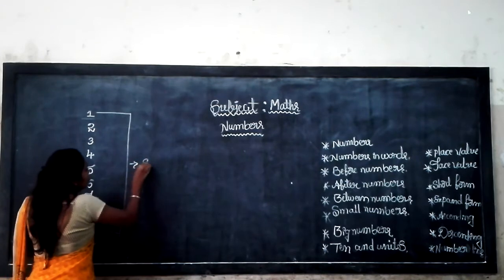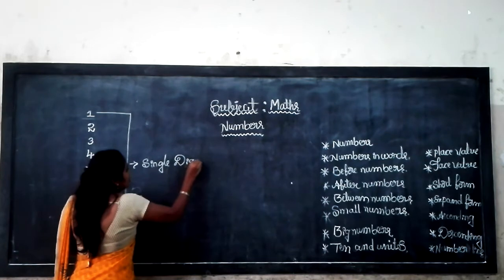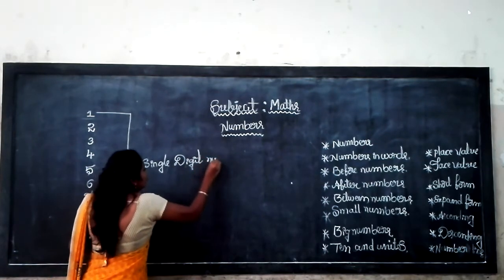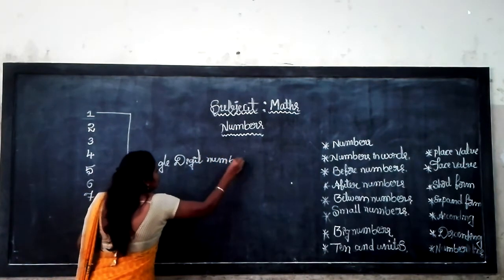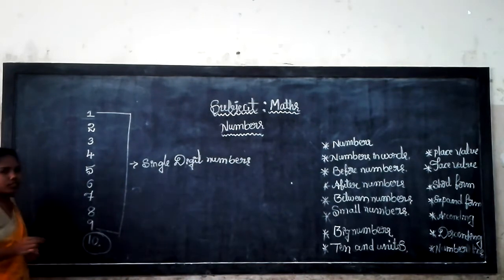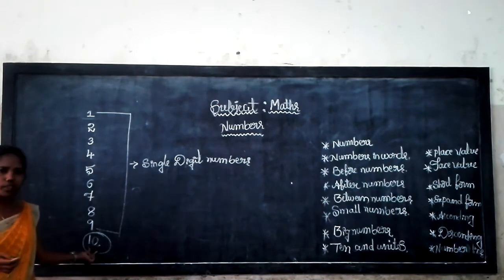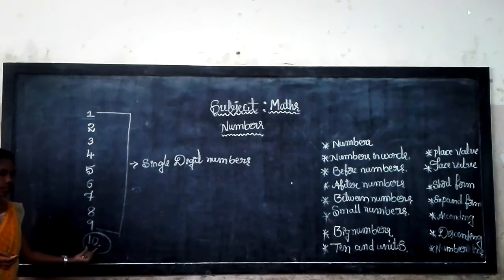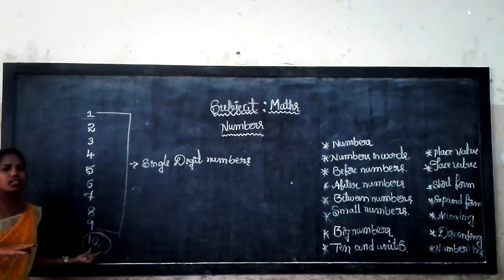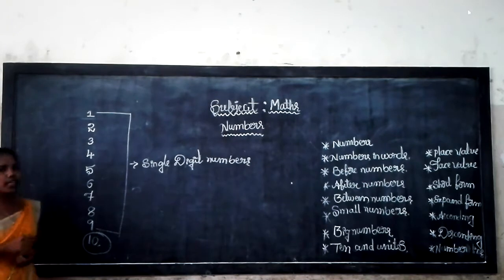Those are single-digit numbers. Now look at number 10. Is 10 a single-digit number? Look — there are two digits: 1 and 0. So that is called a double-digit number. Double-digit numbers start from 10 to 99. I will tell you more in the next class.